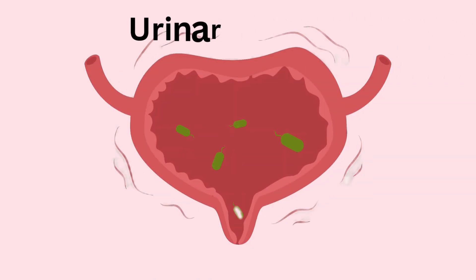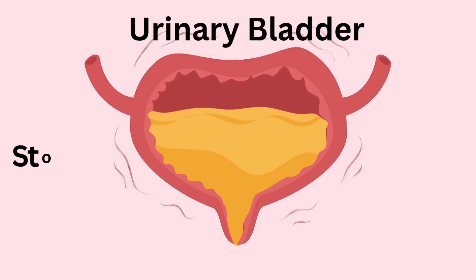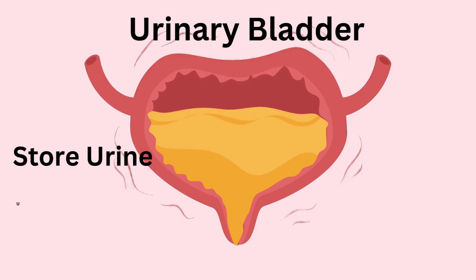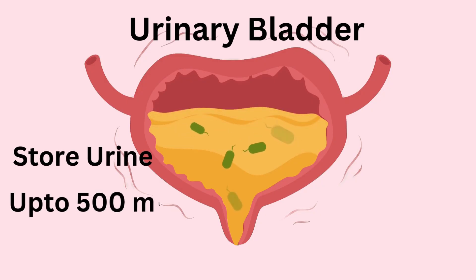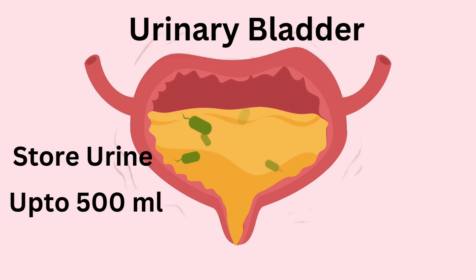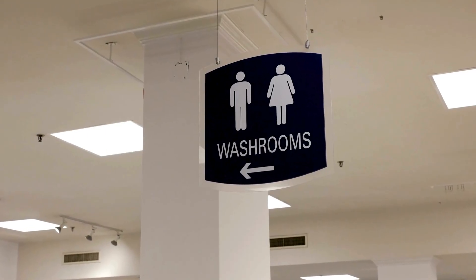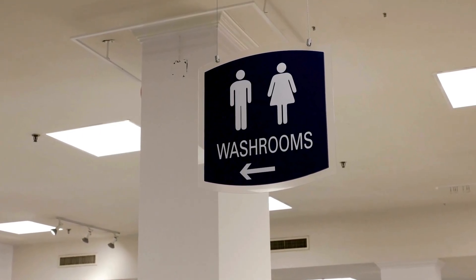Next, the urinary bladder — a stretchy, muscular sac in your pelvis that acts like a storage tank. It can hold up to 500 milliliters of urine comfortably. As it fills, nerves signal your brain: time to go.